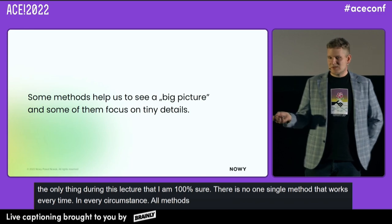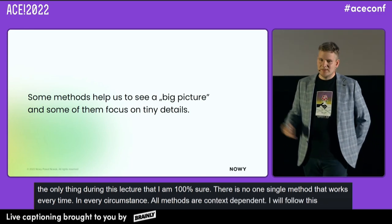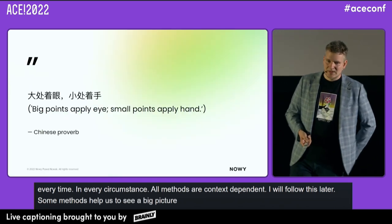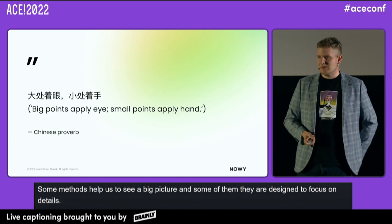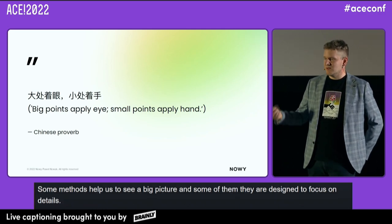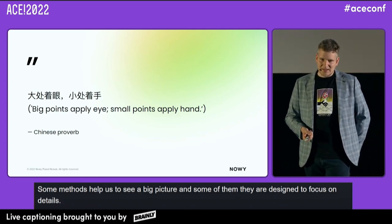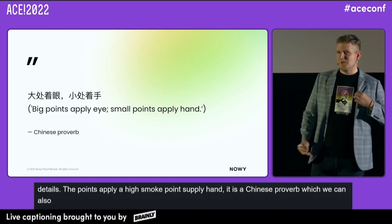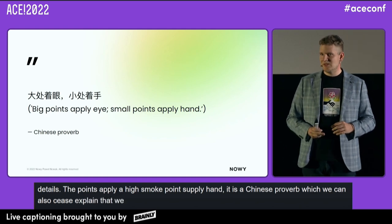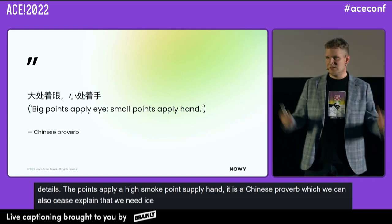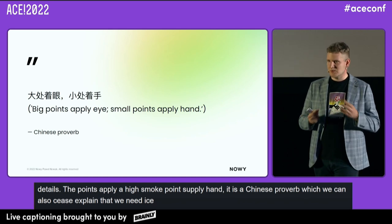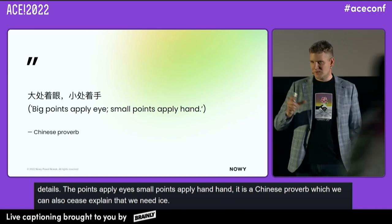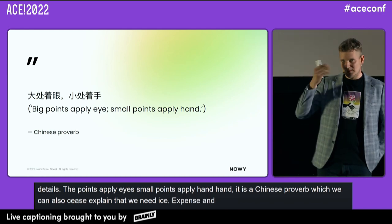Some methods help us to see the big picture, and some are designed to focus on details. There's a Chinese proverb: big points apply eyes, small points apply hands. We need eyes and big pictures to see the complexity of the system, and also tools to deal with the details. Both are important because we have eyes and hands.